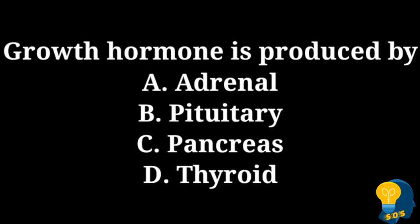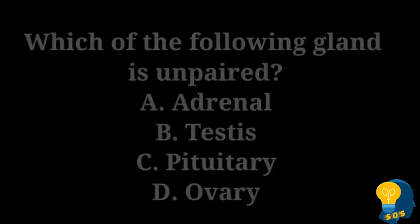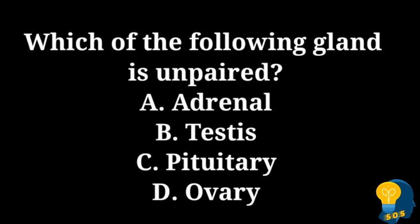The options are option A adrenal gland, option B pituitary gland, option C pancreas, option D thyroid gland. The correct answer is option B, pituitary gland, because the pituitary gland is called the master gland and it is responsible for growth hormone. The next question is: which of the following glands is unpaired?